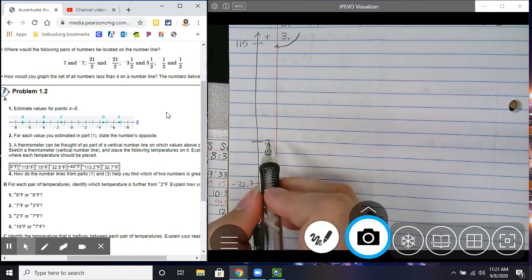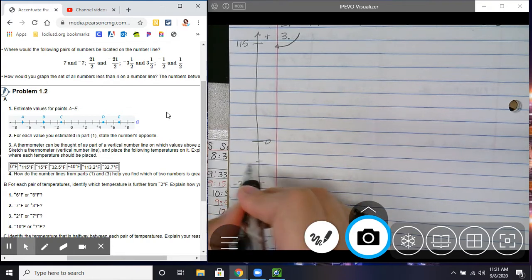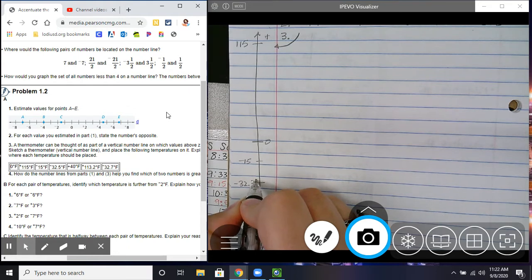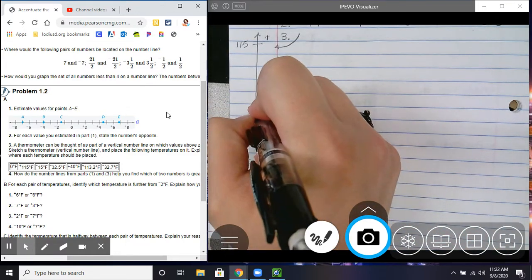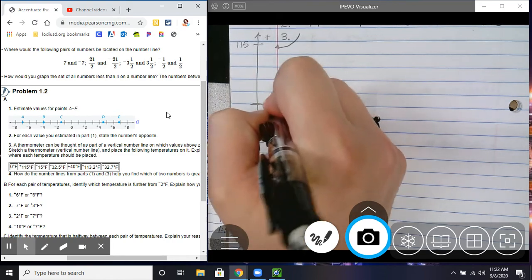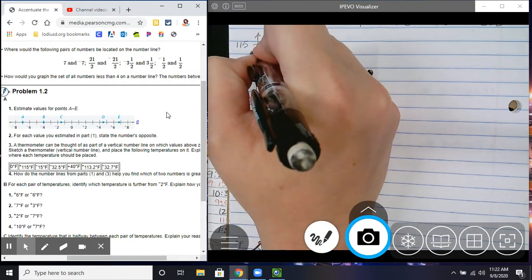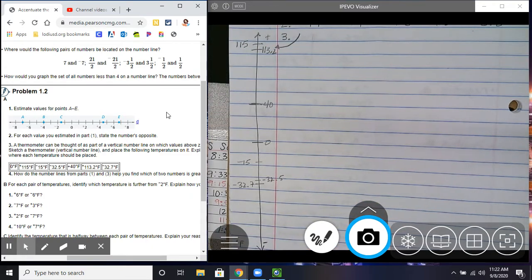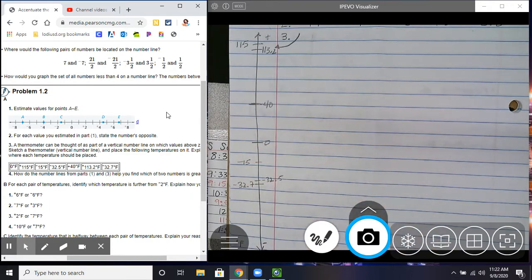So, now we need to do working from left to right negative 15, which is going to be approximately here-ish. So, negative 15. Negative 32.5, which is going to be right above. I'm going to write on this side negative 32.2.5. Positive 40 is going to be like here-ish we'll say. So, positive 40. And then positive 113.2, which is going to be like right here. 113.2. And then we have negative 32.7 already right here.